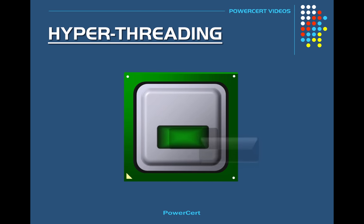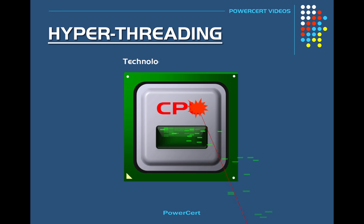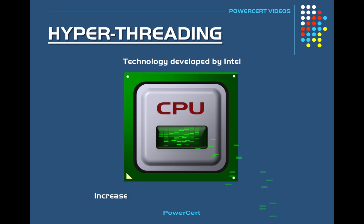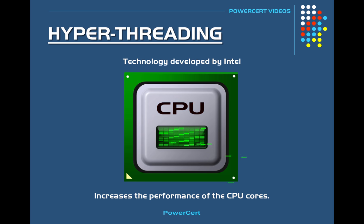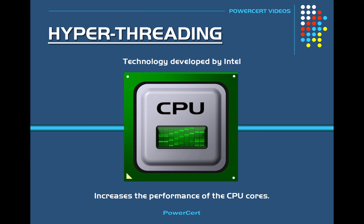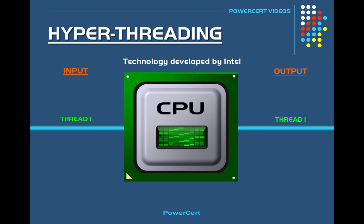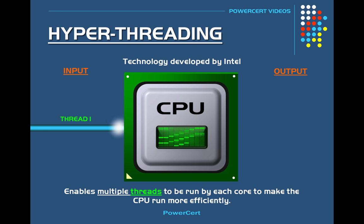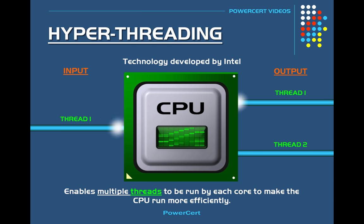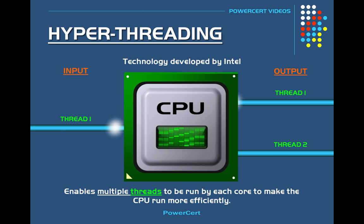What exactly is hyper-threading? Hyper-threading is a technology developed by Intel that increases the performance of CPU cores. It enables multiple threads, which are sequences of instructions, to be run by each core to make the CPU run more efficiently. By doing this, the CPU can perform more tasks in the same amount of time.